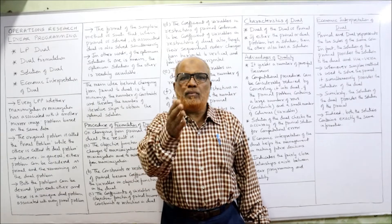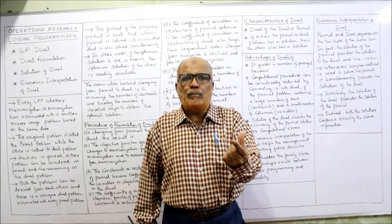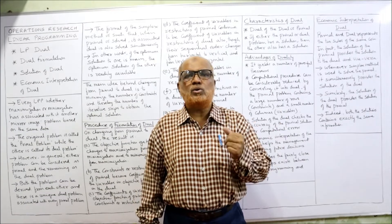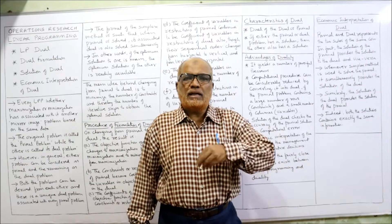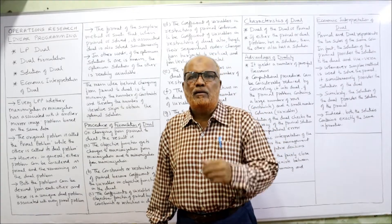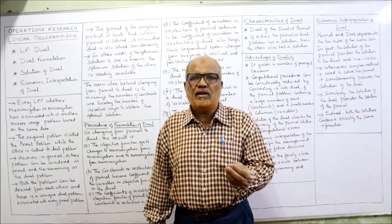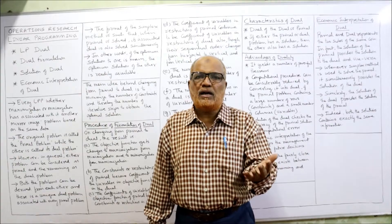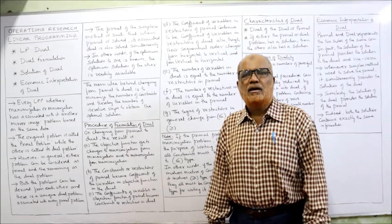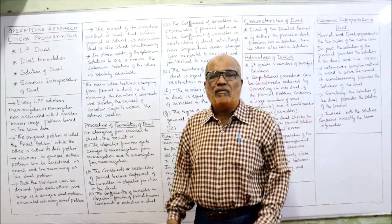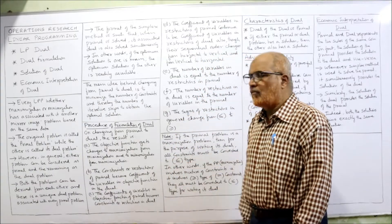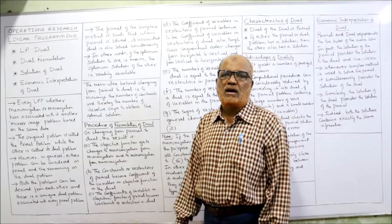In that case, the alternative method is to simply convert the primal problem into its dual problem and solve the dual. By solving the dual we can get the solution of the primal automatically. When it is difficult to find the solution of a primal, we convert it into dual, solve it easily, and automatically get the solution of the primal. That is the main reason behind converting the primal into dual — our time is saved.